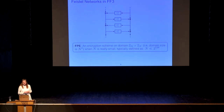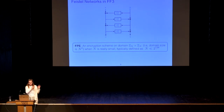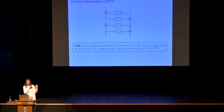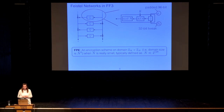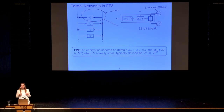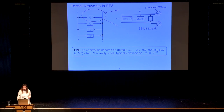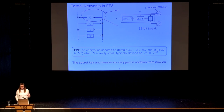Coming back to FF3 construction, to simplify the message domains, I will focus on the domain Z_n × Z_n, where the domain size is N-squared. The round function is constructed as follows: we take the right half of the message, pad it to 96 bits, and concatenate it with 32 bits of tweak. This is the input to the AES function with secret key K, and the output of AES is reduced modulo N to truncate. This way we can use the modular operation to truncate without disabling decryption. Round functions are supposed to be distinct from each other — by changing the tweaks while using AES with the same secret key, we obtain different round functions. From now on, I will drop the secret keys and tweaks from the notation.